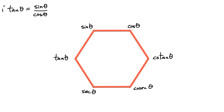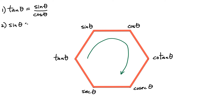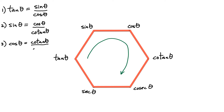Now we start writing down our relationships — we already have one. We started at tangent theta, then we go in the clockwise direction. Starting at a vertex, the next one becomes the numerator and the one after that becomes the denominator. So for the next equation: sine of the angle theta equals cos of the angle theta divided by cotangent. And if we started at cos: cos of the angle theta equals cotangent of the angle theta divided by cosecant.